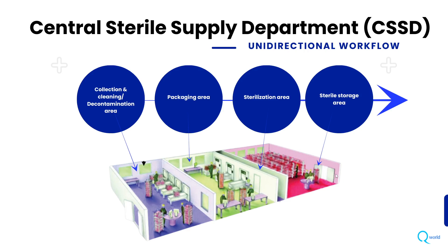After sterilization, there is a storage area which is sterile, where items are stored for future use and dispatched as and when required. So there are mainly four areas, and as you can see, there is a unidirectional workflow to avoid any contamination.